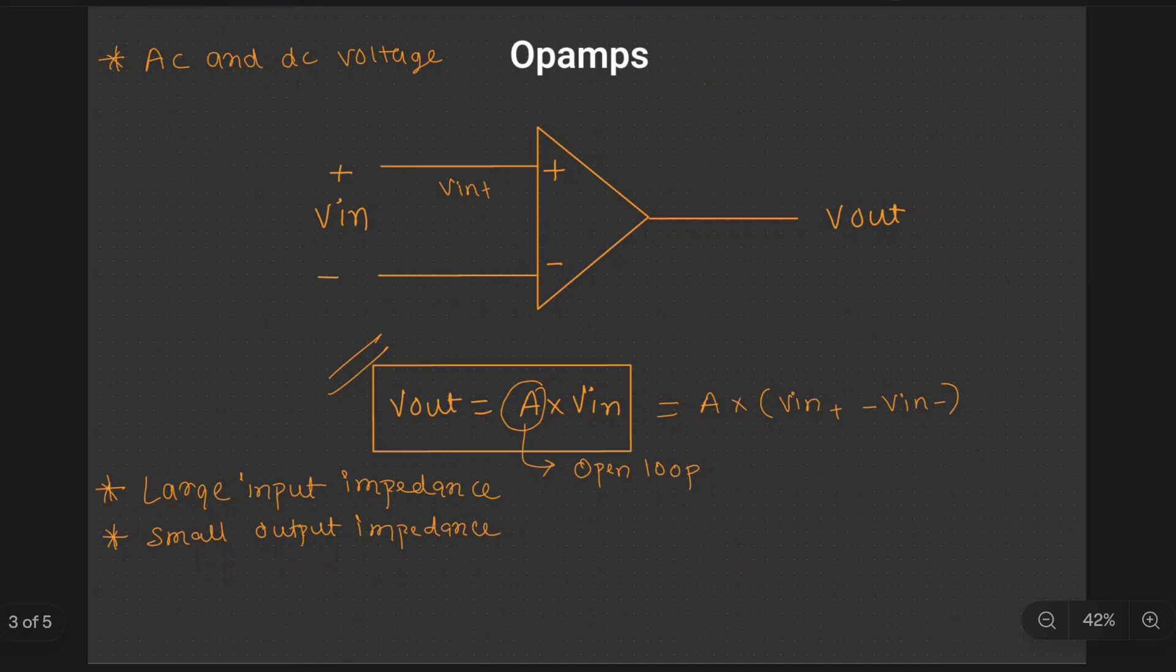This operational amplifier is capable of giving a very large input impedance, nearly infinite, and a very small output impedance. What this output impedance does, small output impedance means there is less voltage drop.